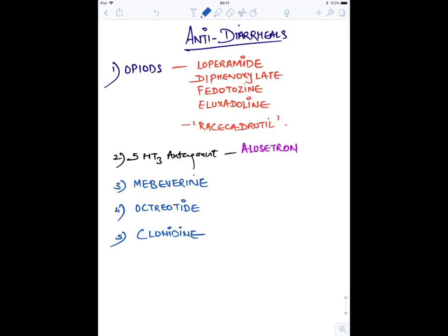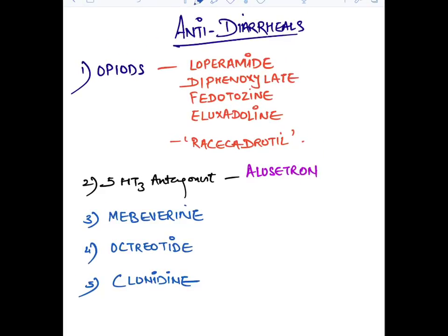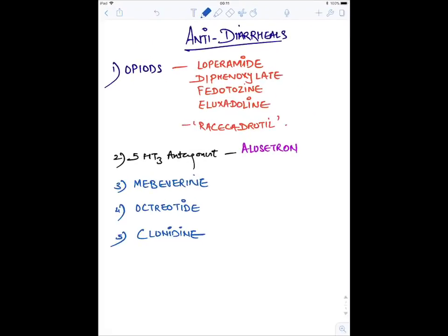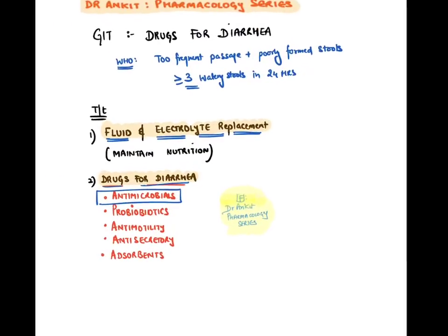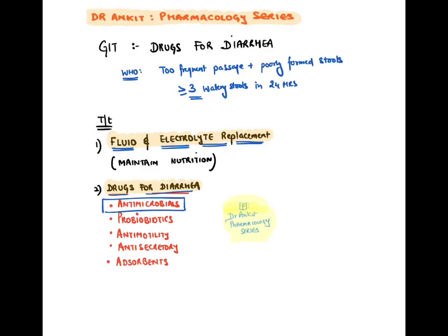For treatment of diarrhea: anti-motility drugs like opioids, loperamide (non-addictive opioid), diphenoxylate (addictive opioid — atropine added to prevent abuse). New drugs: fidaxomicin, eluxadoline, and racecadotril. 5-HT3 antagonist alosetron for IBS. Mavivirine (dopamine depleter), octreotide for secretory diarrheas, clonidine for diabetic diarrheas and IBS. The main treatment of diarrhea is fluid replacement — anti-motility and anti-secretory drugs are rarely used.